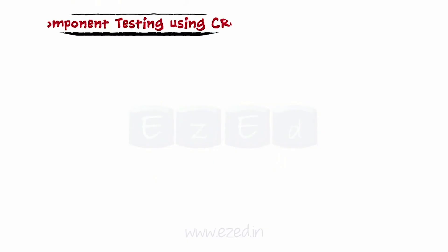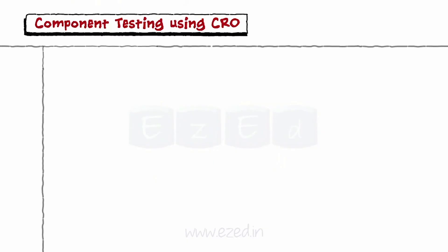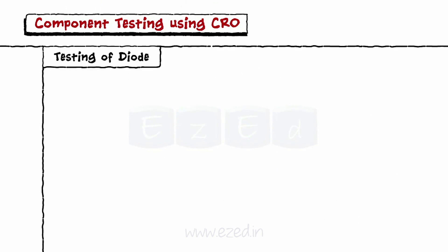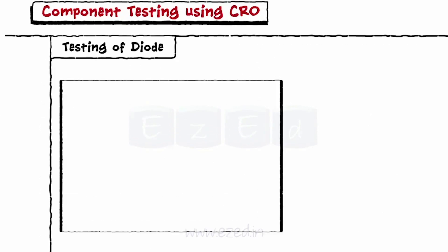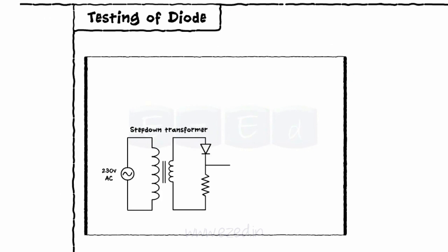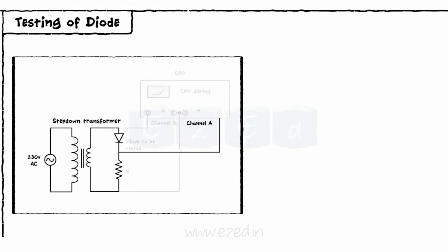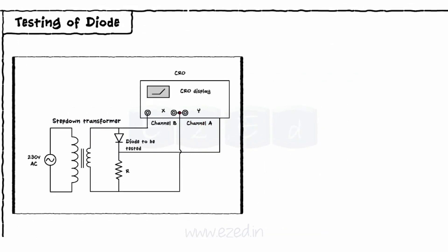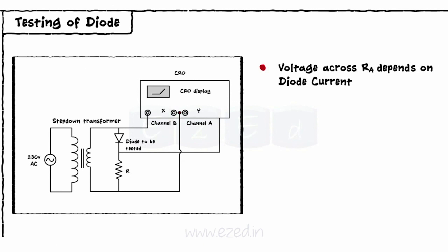Let's study the use of a CRO for component testing. We will only see the testing of a diode. A diode is connected in series with a resistor as shown. The voltage across the resistor is connected to channel A, which acts as an output as it is dependent on diode current.